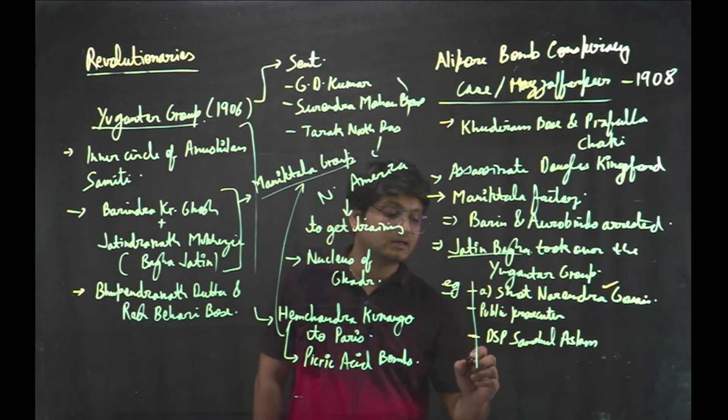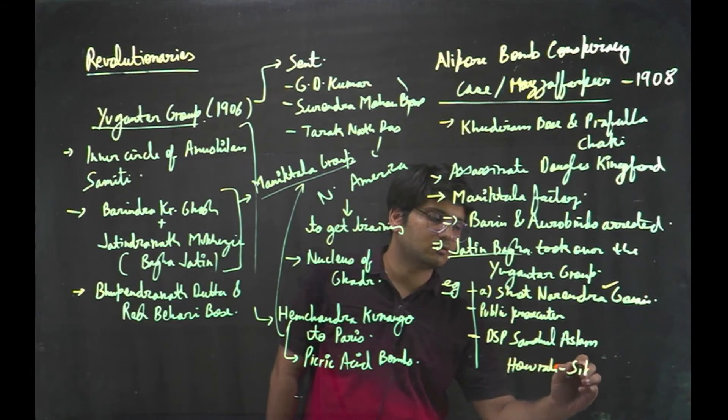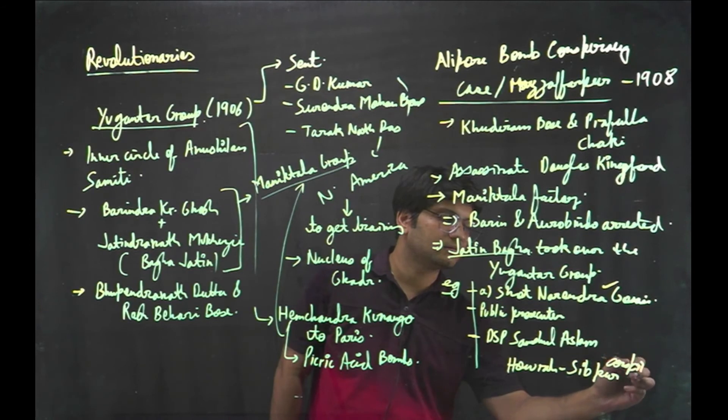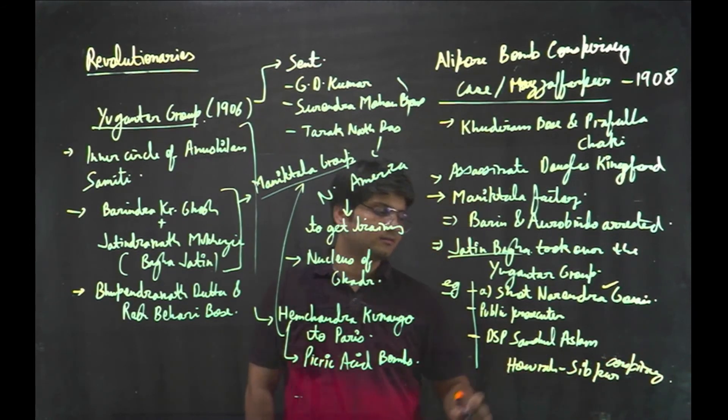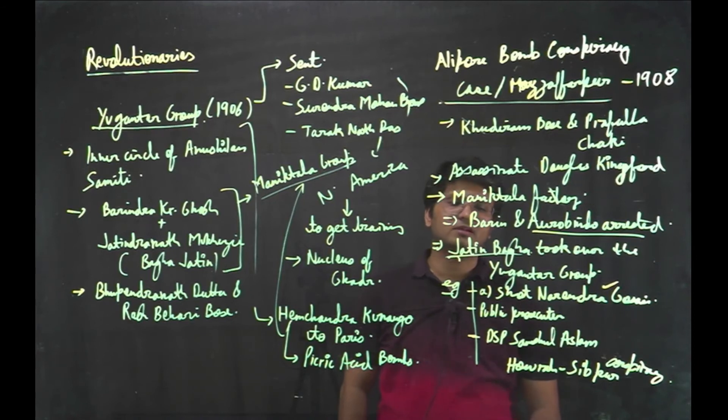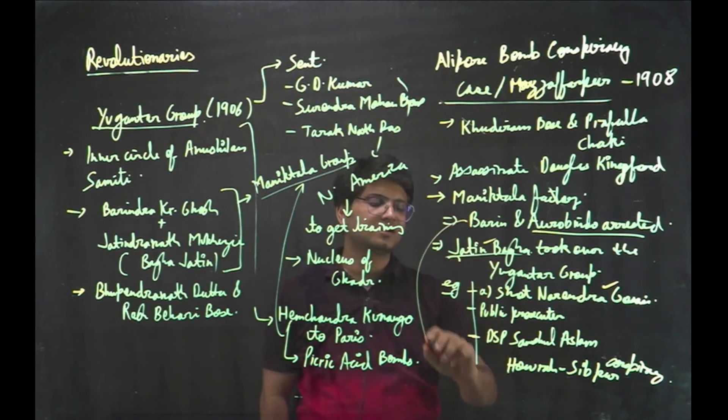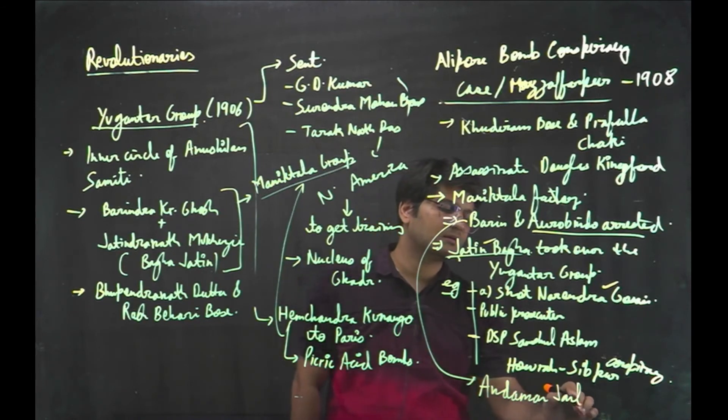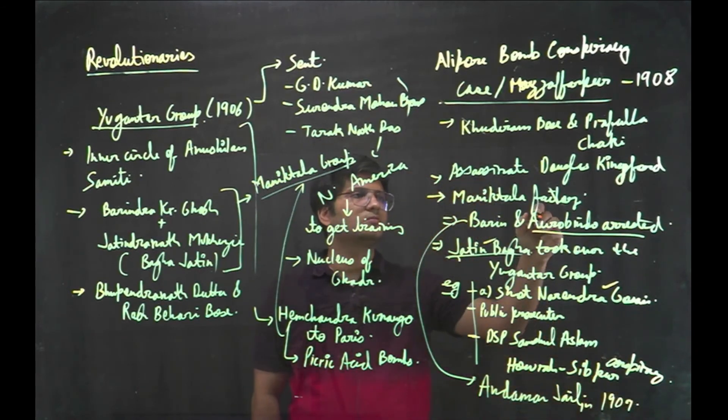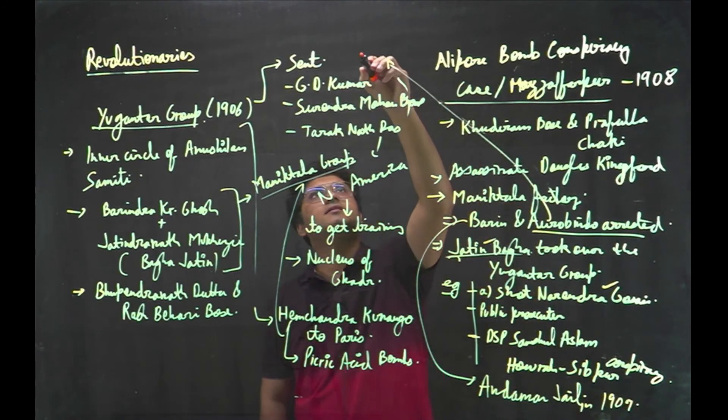So several persons including Jatin Bagga were arrested in Shamsul Aslam case but he was released due to the lack of evidence. Later on, in Howra Shippur Conspiracy, he was again arrested. Again, because of the lack of evidence, Jatin Bagga was released. And Barin was sent to Andaman jail in 1909. And Aurobindo was successfully defended by C.R. Das.